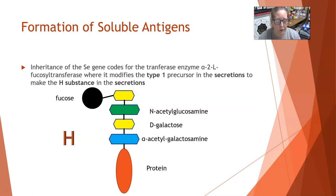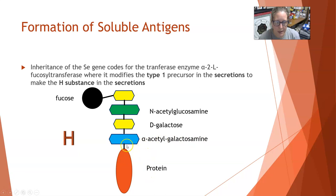The enzyme modifies a type I precursor in the secretions to make the H substance in the secretions. The type I precursor is very similar to the precursor substance used to put the antigens on red cells, but slightly different. It starts with a protein, then has an N-acetylgalactosamine added, then a D-galactose, then an N-acetylglucosamine, then another D-galactose, and then it's linked to a fucose. So the type I precursor is this straight chain, and when you add fucose to it, it becomes the H substance in the secretions.